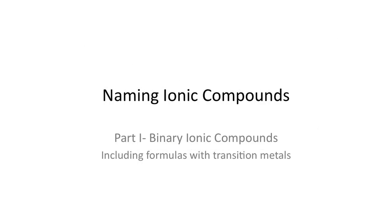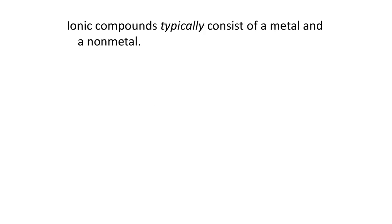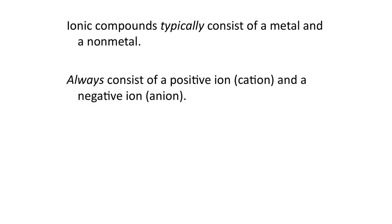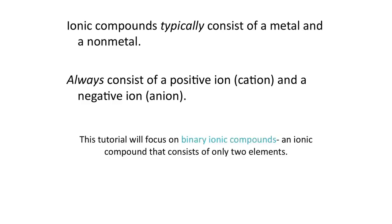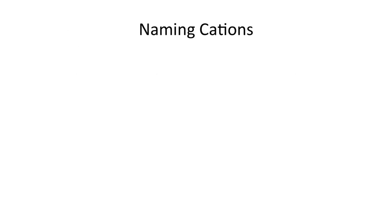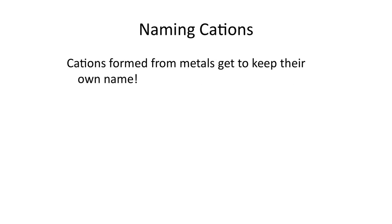Hello and welcome to The Chemistry Solution. This tutorial is on naming ionic compounds, and we're going to focus on naming binary ionic compounds. I will also include some examples where you have formulas with transition metals and you have to use a Roman numeral in the name. Remember that ionic compounds typically consist of a metal and a nonmetal, always consisting of a positive ion or cation and a negative ion or anion. This tutorial will focus on binary ionic compounds — ionic compounds that consist of only two different elements.